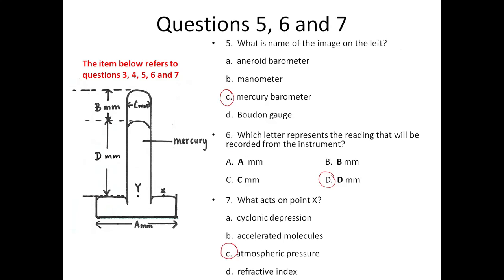Five is C. We have the mercury barometer. What is the name of the image on the left? Mercury barometer. Six: Which letter represents the reading that will be recorded from the instrument? That will be D.